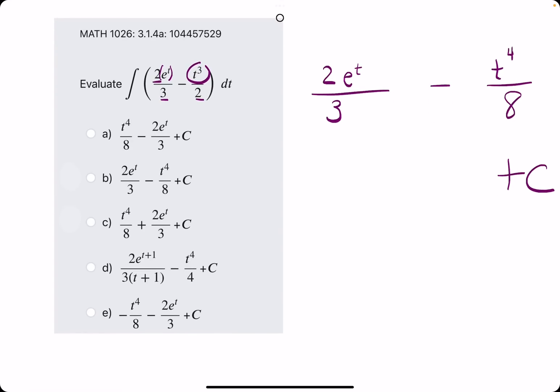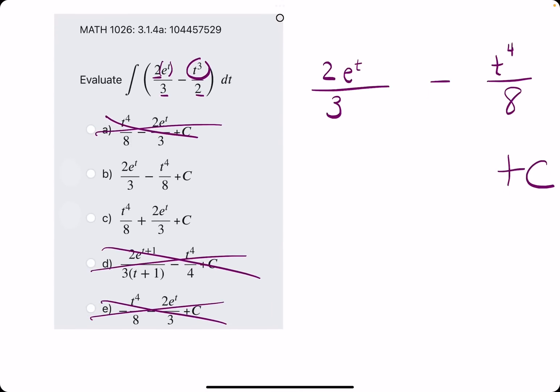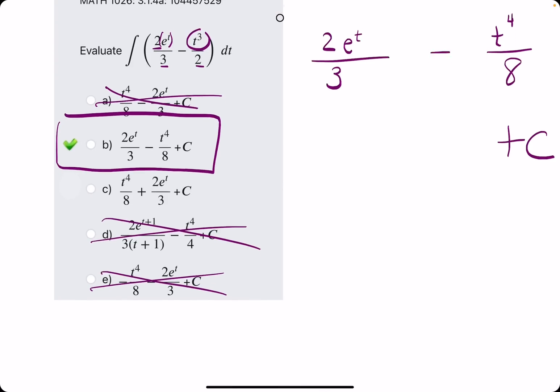We're looking for 2 over 3 e to the t. There's this answer and this answer that has that term. The other ones are either negative or just wrong. So then we're looking for minus t to the fourth over 8. So it looks like option B is our answer.